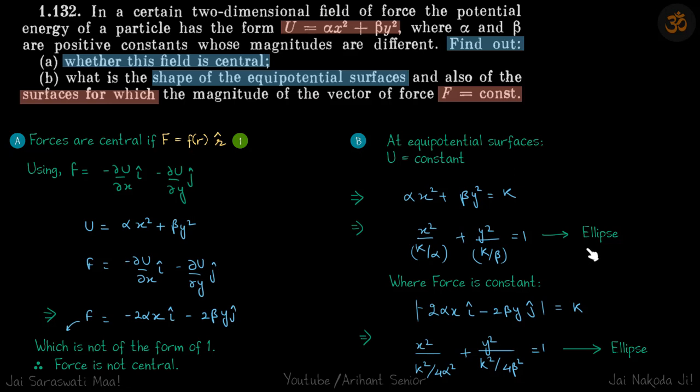When force is constant, we have already calculated the force here. So let's talk about the magnitude of force because the magnitude of the vector is constant. The magnitude of this, we can rearrange and write like this, which also comes to be the shape of an ellipse.